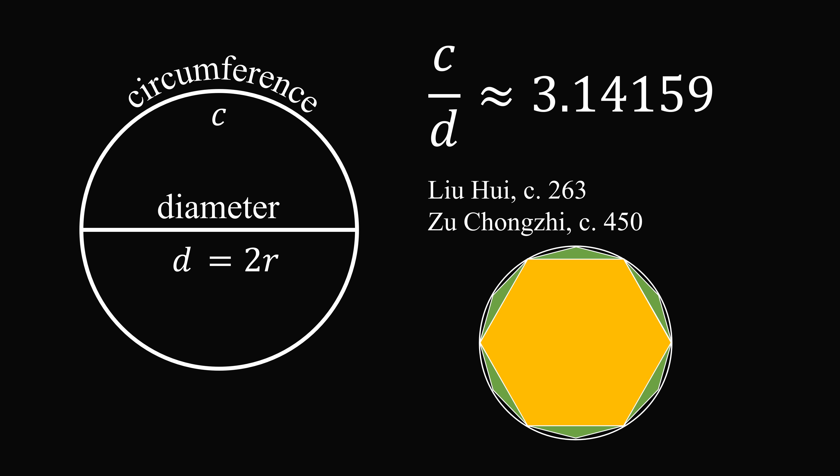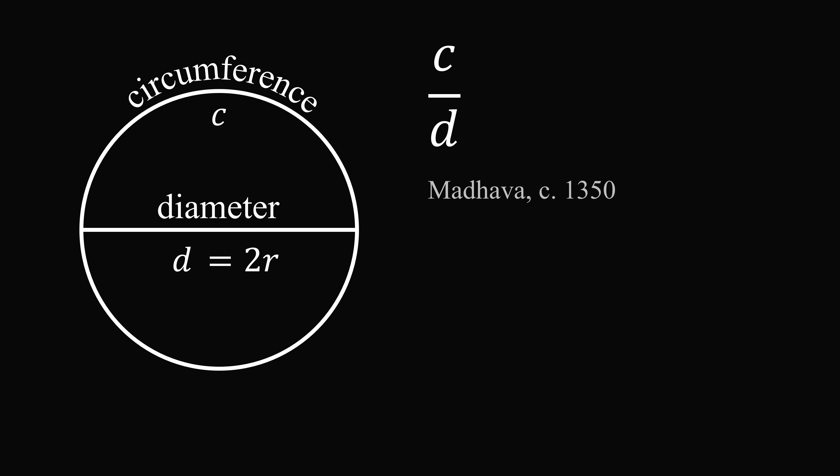Eventually, this geometrical method reached its limit. So the next phase of development came in about 1350 in India by Madhava. And he came up with the first infinite series for pi.